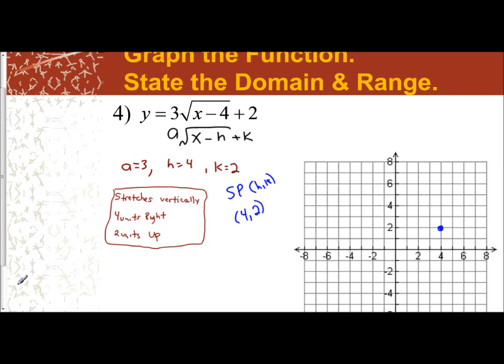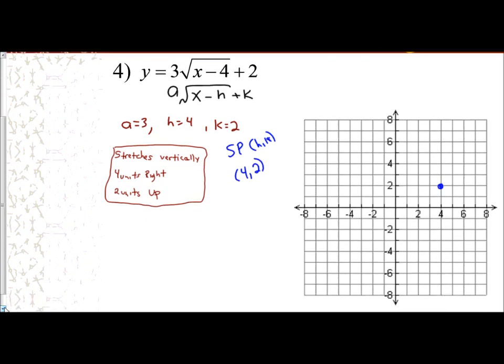Now, what's the domain and what's the range? That's where h, k comes in. Domain, your x starts at 4, so x is going to be greater than or equal to 4. My range starts at 2, and since a is positive, I know it's going to be pointing upwards, which means y is greater than or equal to 2. So now I have my domain and I have my range.